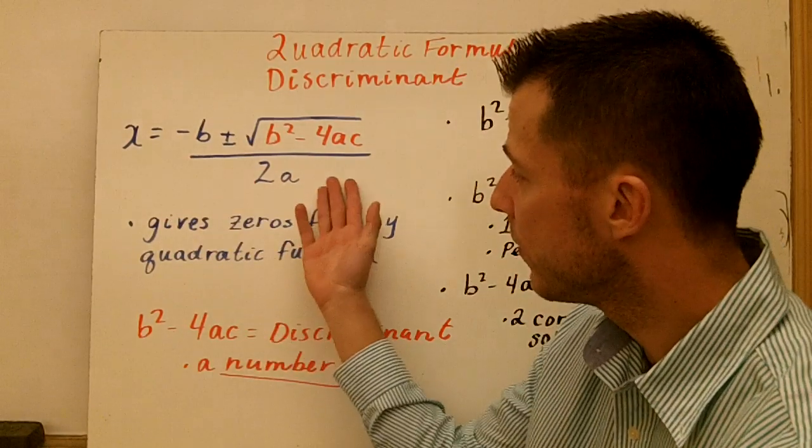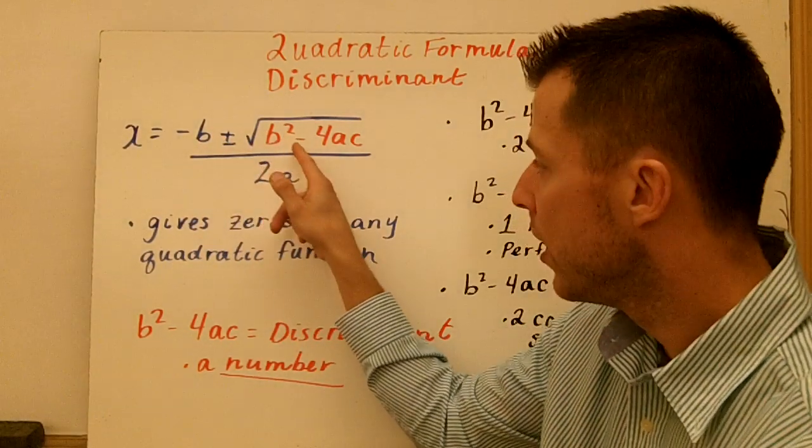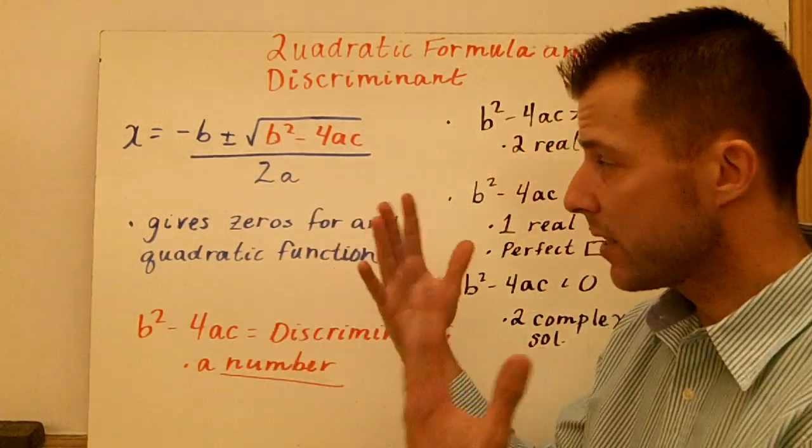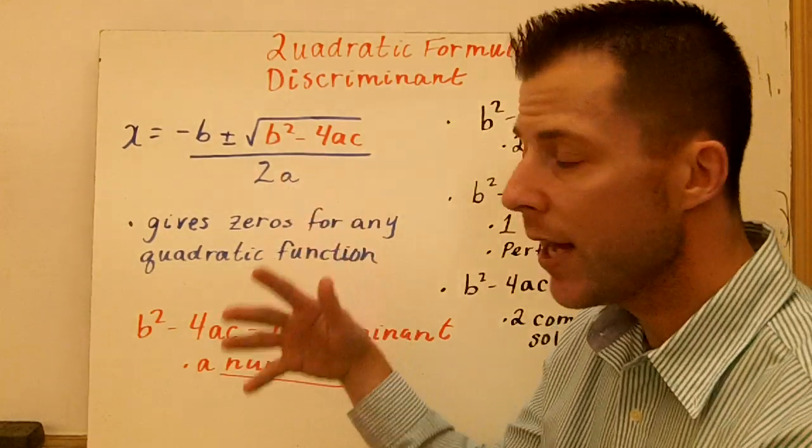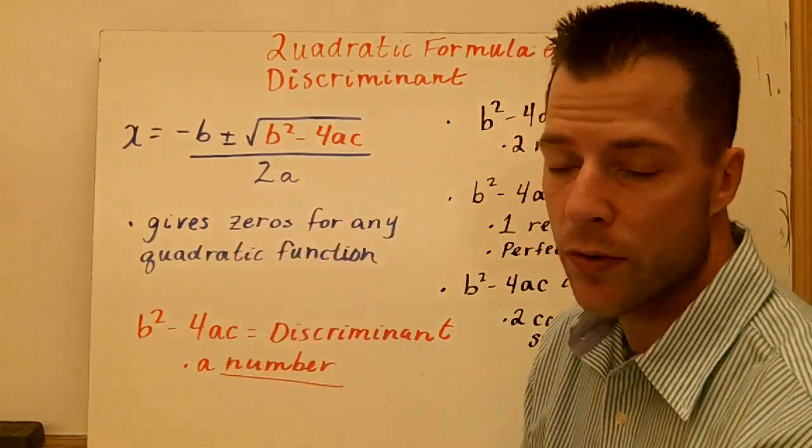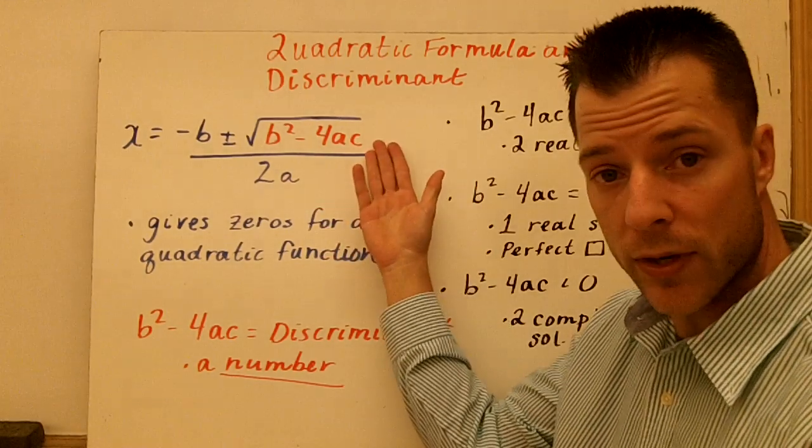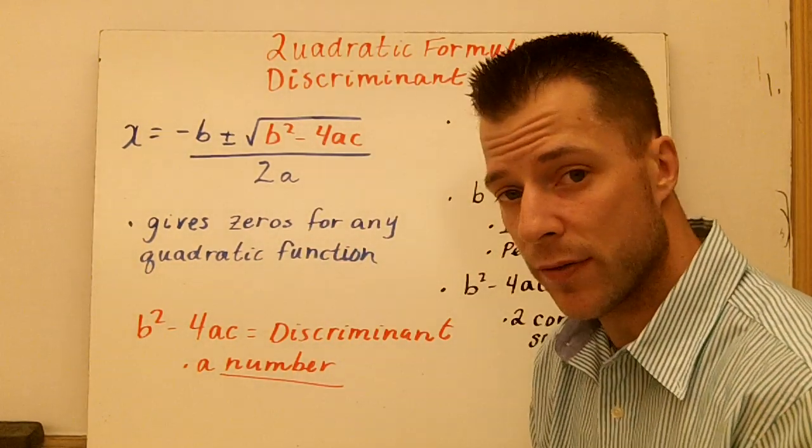So here we've listed what the Quadratic Formula is. Negative b plus or minus the square root of b squared minus 4ac, all divided by 2a. That's the equation we're going to substitute our a, b, and c values into. Now in red, I've made b squared minus 4ac red for a reason. That's what we call the discriminant. The discriminant tells us how many solutions a quadratic function can have.